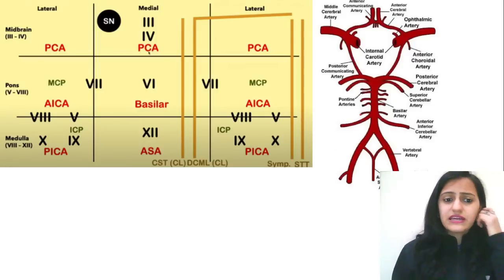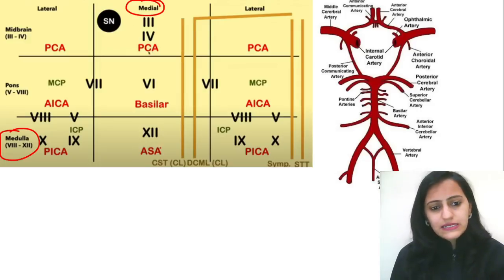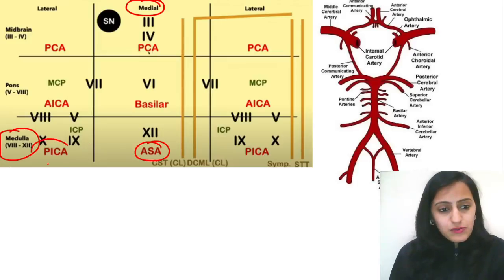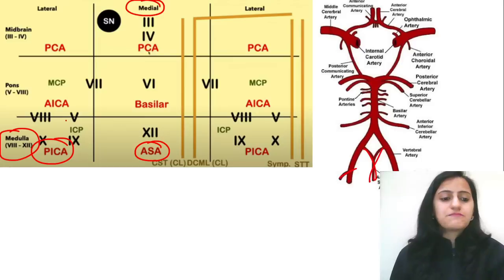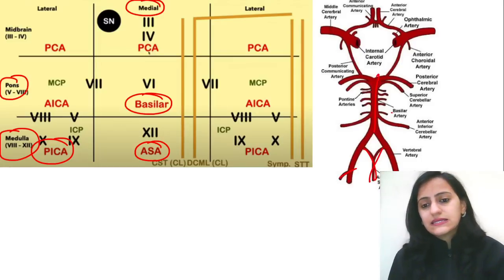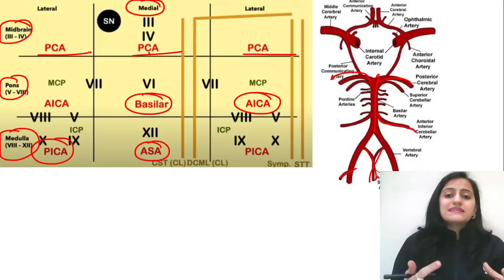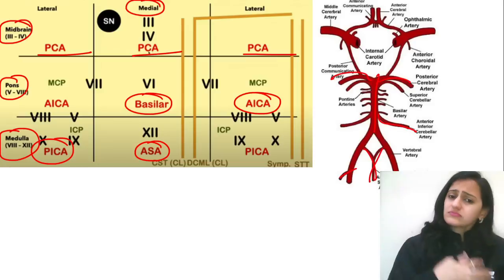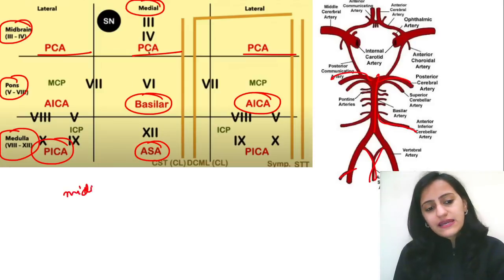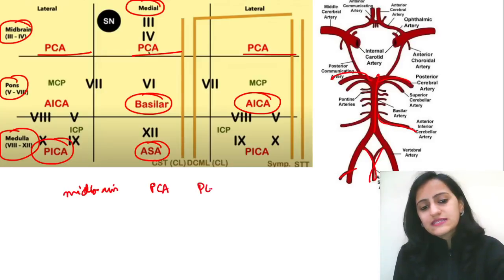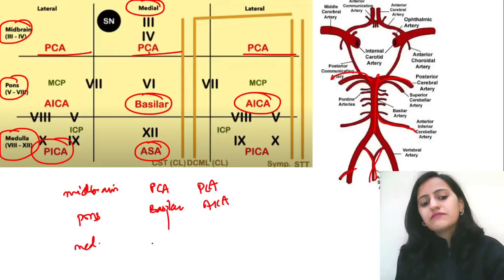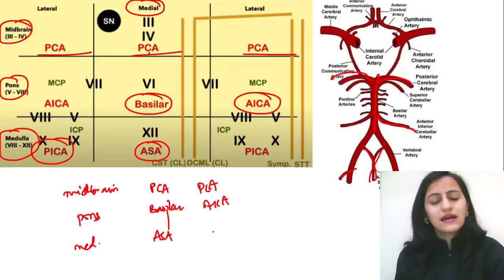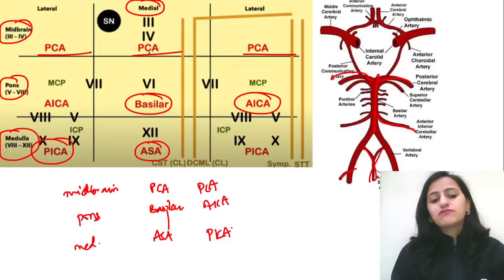Reinforcing the artery-syndrome correlation: in medullary syndrome, the medial one involves the anterior spinal artery, and the lateral one involves PICA — both branches of the vertebral. In the pons, the medial syndrome involves the basilar artery, and the lateral involves AICA. In the midbrain, it is the posterior cerebral artery for both medial and lateral syndromes. Remember, exam questions often ask which artery is thrombosed given a clinical scenario, not just the diagnosis.